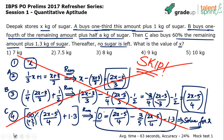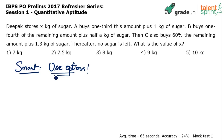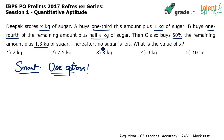Let's look at the smarter way — go by options. Use reverse substitution, or reverse engineering. Having five options is not a disadvantage; it's an advantage. Instead of finding x, substitute each option and check which value satisfies all three conditions: A buys one-third plus 1 kg, B buys one-fourth of remaining plus half kg, C buys 60% plus 1.3 kg, leaving nothing. Whichever option gives zero sugar left is your answer.